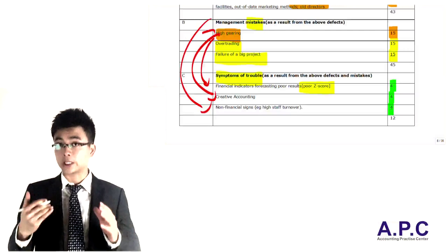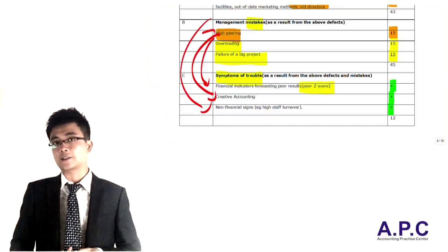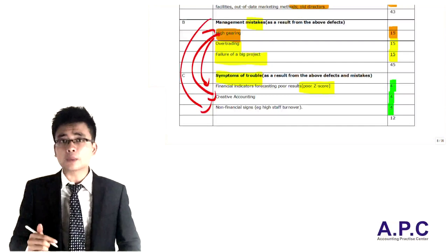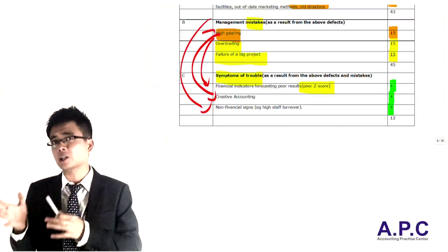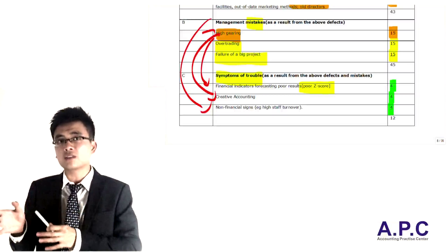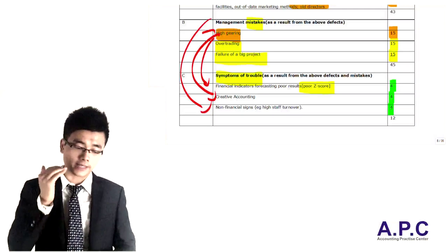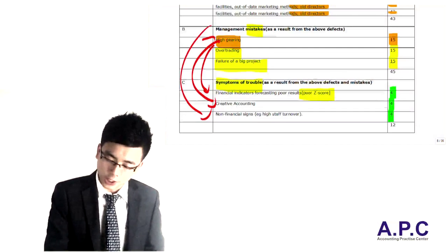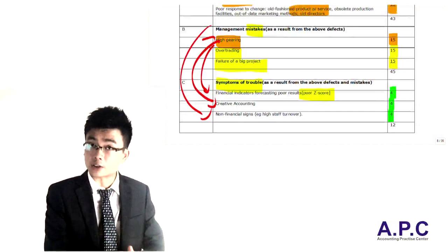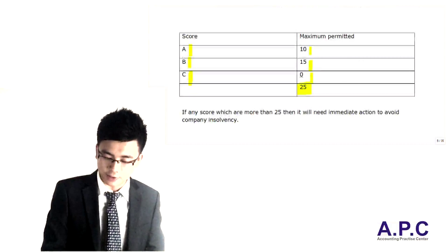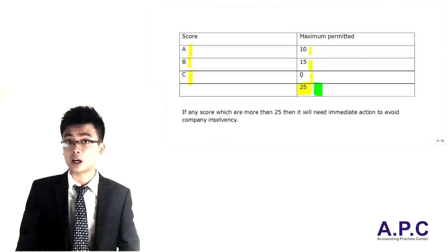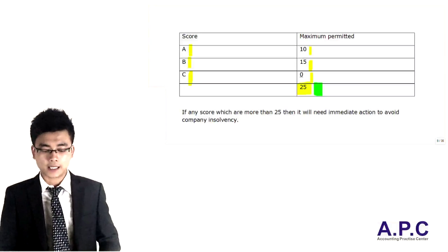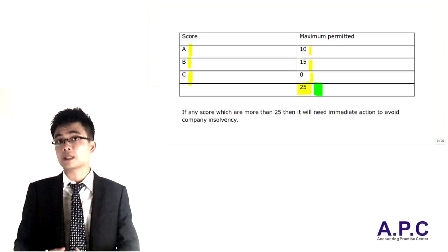We're going to total up the marks from analysing this company. As I said, it will be subjective — you need to know which company you are comparing to and which industry you're in so you can define the exact amount for each category component. The total marks for all of them is 100, and if you score more than 25, it would suggest that your company's not doing really well. Those are the bits and pieces you have to know — those are the two models.